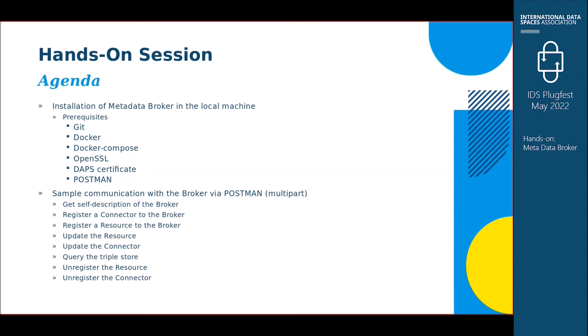This includes how to get a self-description of the broker, how to register a connector into the broker, how to register a resource under a connector, how to update a connector's self-description, how to update properties or metadata of a resource, how to query the triple store to see what's in the database, and how to unregister a resource and unregister a connector.